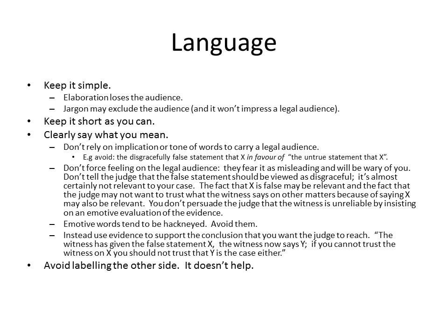Instead, use the evidence to support the conclusion that you want the judge to reach. Going back to the example, you'd say something like: 'The witness has given the false statement that X, Y and Z happened. The witness now says that ABC has happened. If you can't trust the witness on X, Y and Z, you shouldn't trust the witness on ABC.' Now, judges will, of course, not make general findings about the credibility of a witness in general — it's very rare for them to do that. They're much more likely to concentrate on individual factual issues where they either do or do not believe the witness.